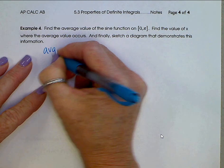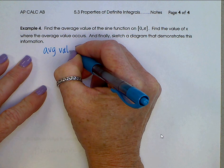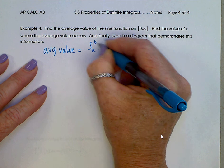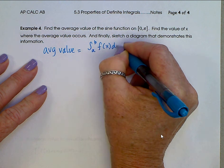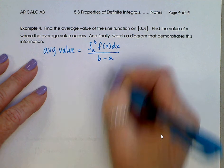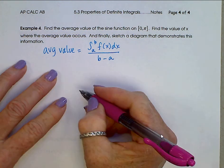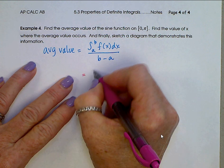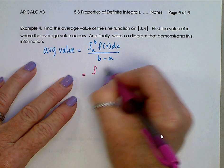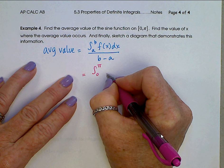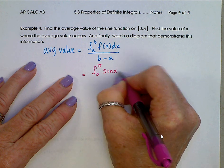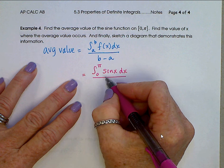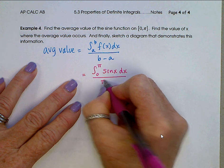Average value, by definition, is the integral from a to b of f of x dx divided by b minus a. As it relates to this problem, then, this average value is the integral from 0 to pi of the sine function dx, divided by the length of the interval, which is pi minus 0.